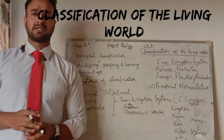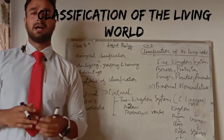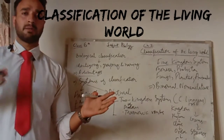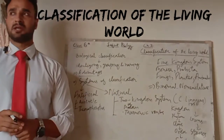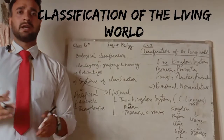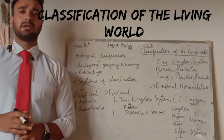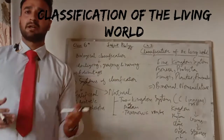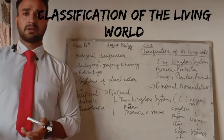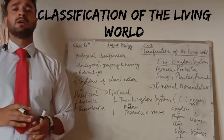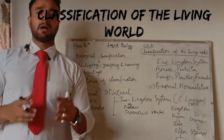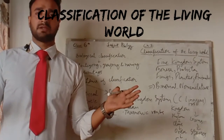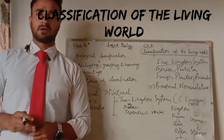First we should understand why we need to classify living organisms. This chapter is all about the classification of living organisms. There are more than 30 million living organisms present on the surface of the earth, in the air, or under the water. So how do we recognize them? How do we classify this huge number, this huge diversity of species?